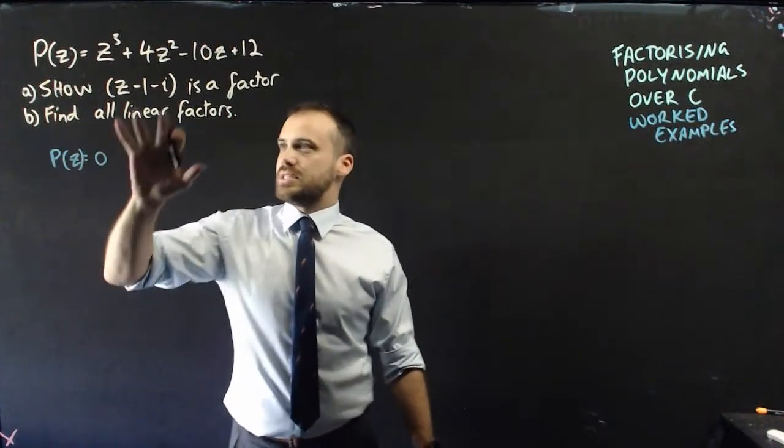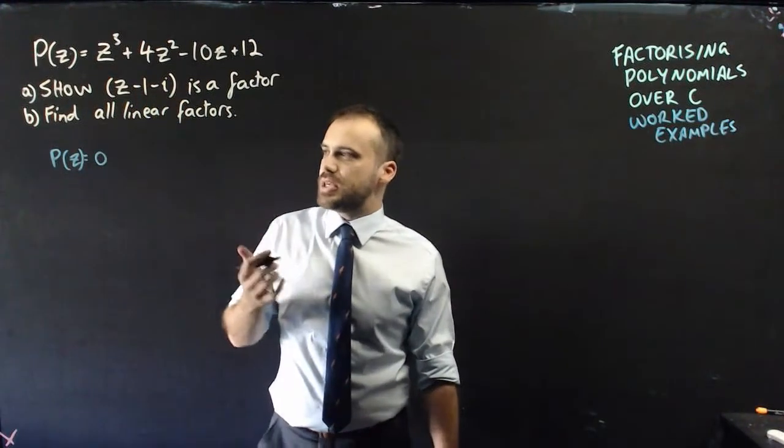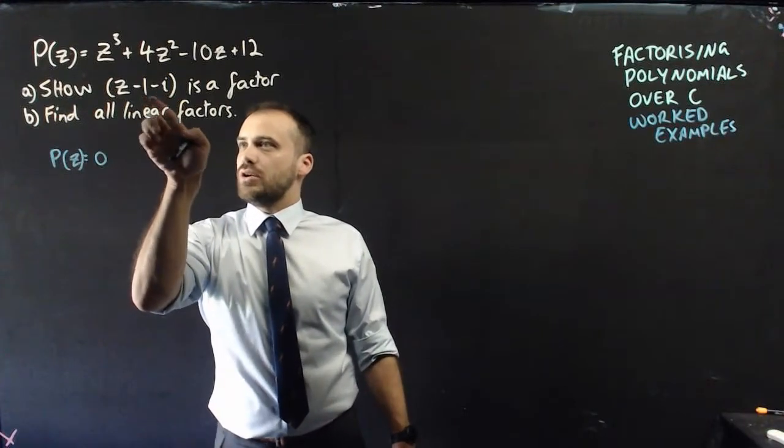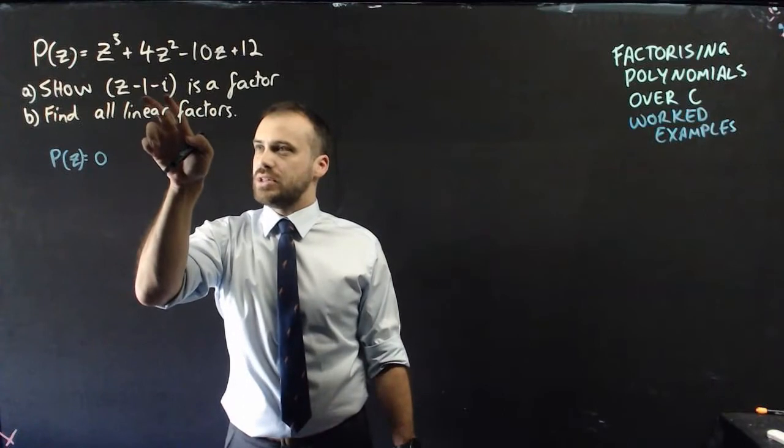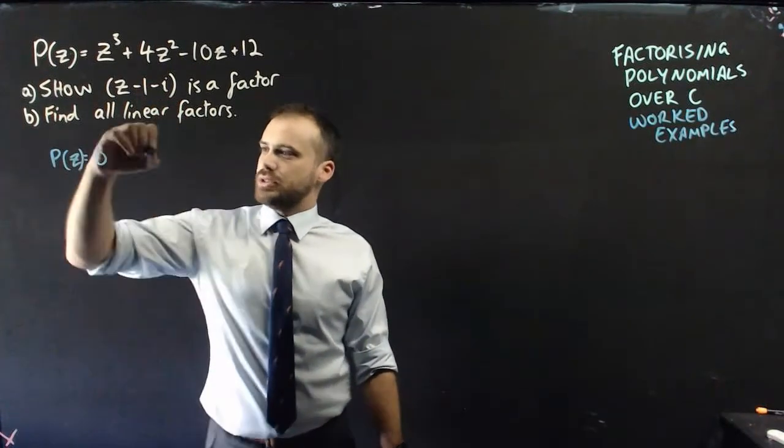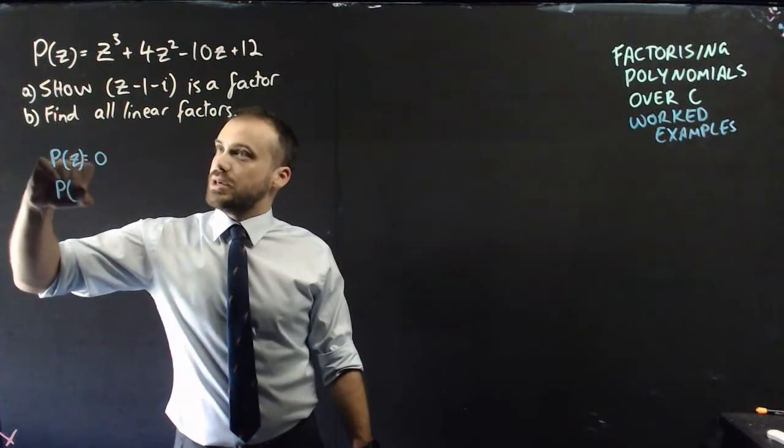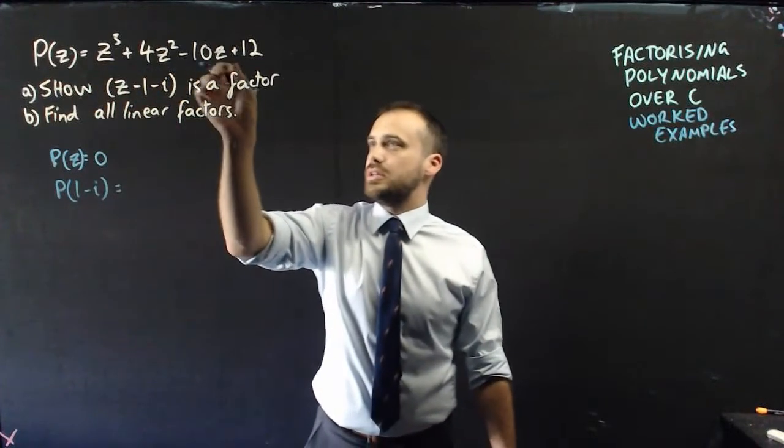So the first thing we need to do is sub that bit in for z. Now, you need to be careful what you're subbing in here. You're subbing in positive 1 minus i, because that is what our factor is, the minus bit we don't look at. So let's test out P(1 minus i), and we do that by subbing 1 minus i in here, here, here.